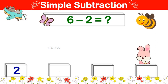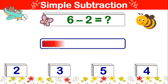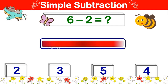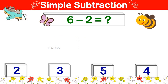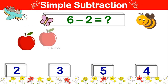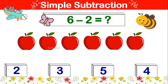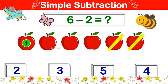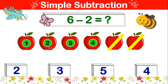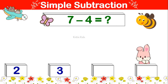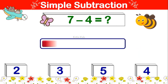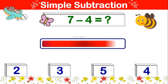6 minus 2 is equal to. Let's take 6 and subtract 2 from it. 1, 2, 3, 4, 5, 6. Now let's subtract 2 from it. 1, 2. Remaining is 1, 2, 3, 4. 6 minus 2 is 4.